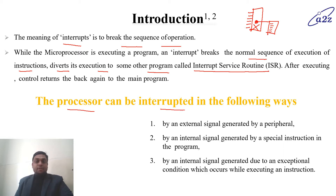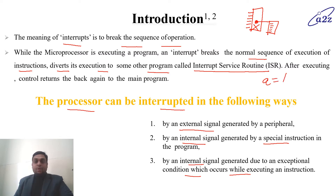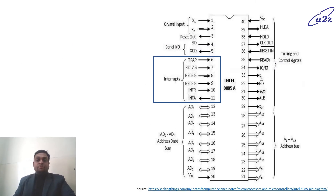The processor can be interrupted in the following ways: by any external signal, by any internal signal generated by any special instruction, or by any internal signal generated due to a condition which occurs while executing. For example, if there is a program with an instruction A equals B divided by C, this is perfectly correct unless C equals zero. If such a condition occurs, then an interrupt is generated. Here is a pin diagram of the 8085 microprocessor.